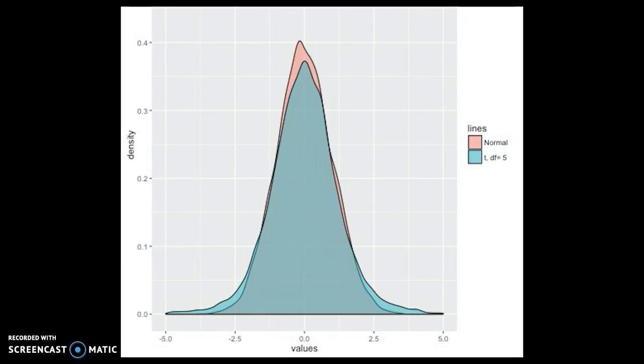Hi everyone, this is a short video to show you some of the differences between the T and the Z distributions. What I've done is generate random values, about 10,000 random values, for both the T and the normal distributions, with the T distributions at different levels of degrees of freedom.